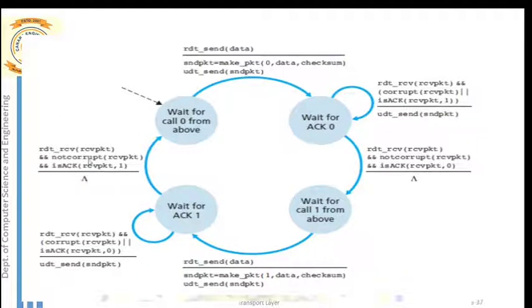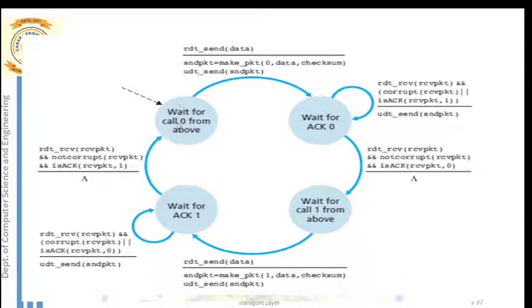The positive condition is: if the received packet is not corrupted and the acknowledgement has the expected sequence number — ACK 1 — then do nothing, move to the new state, and wait for the next packet from the application layer. This completes the RDT 2.2 sender behavior.